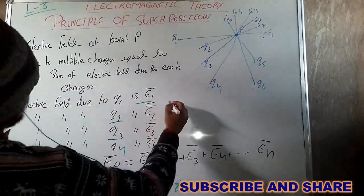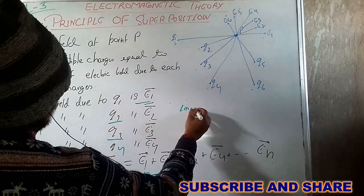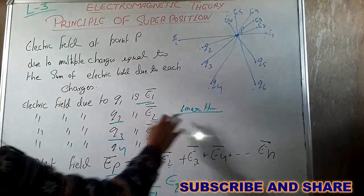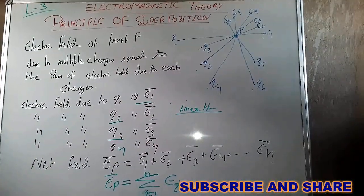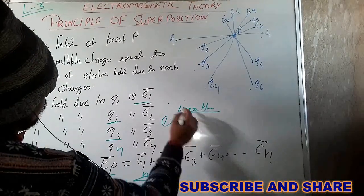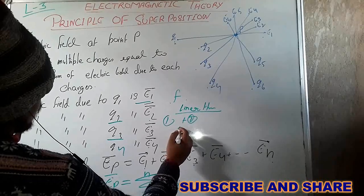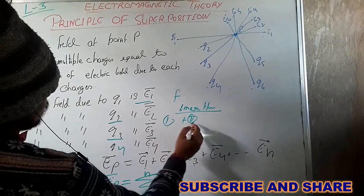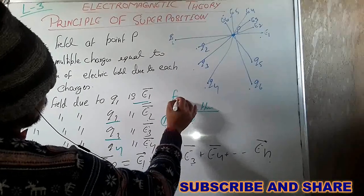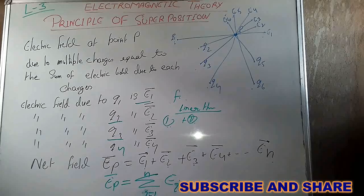This is the principle of superposition. Why? Because electromagnetic theory is a linear theory. In a linear theory, if solution 1 and solution 2 satisfy the same function F, then the combination of these solutions will also be a solution of that function. So this is the principle of superposition.